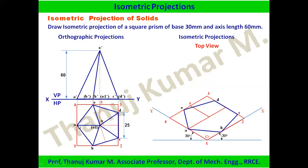After locating the center O in the isometric box, draw a vertical line from it representing the height: 60 mm × 0.8164. This gives the apex of the pyramid. Then from the apex, join lines to all base corners A, B, C, D, E to form the slant edges.